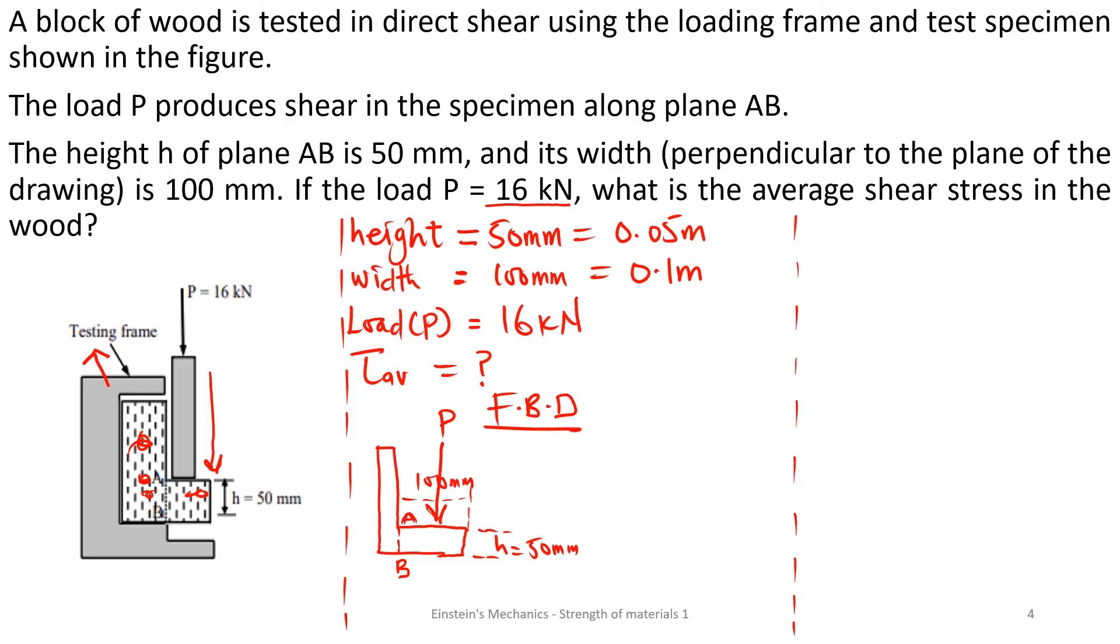The force here will shear this part. Let me call this part as two, this part as one. It's like I'm dividing the shape into two. When you apply this compressive force downwards, it is likely to shear part two at the surface AB.